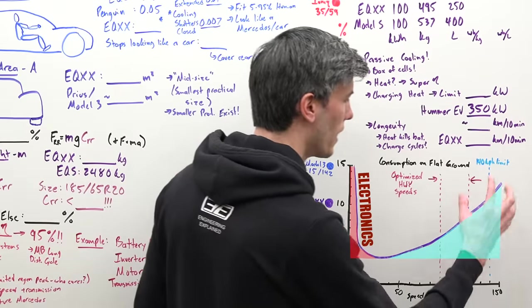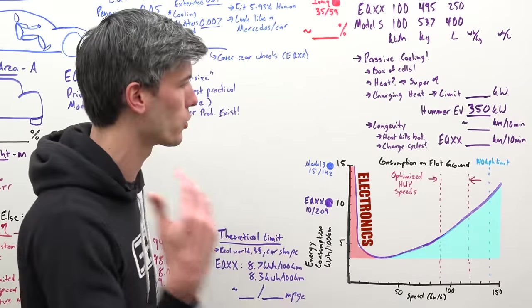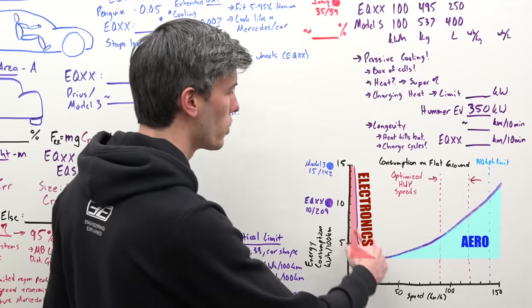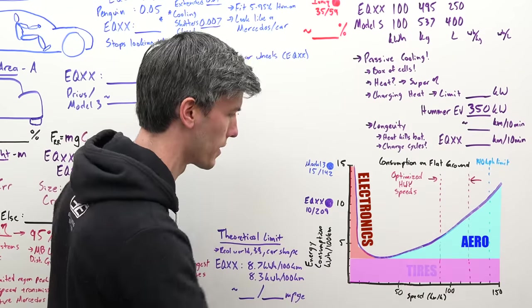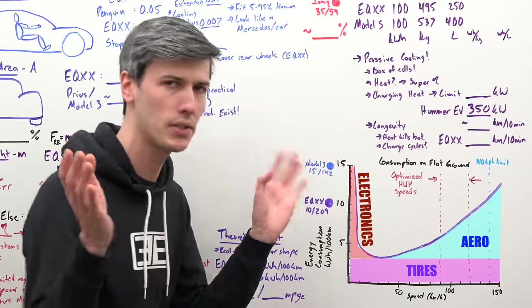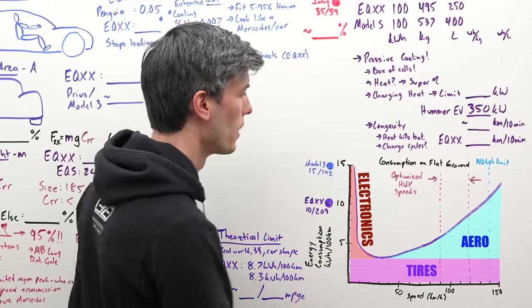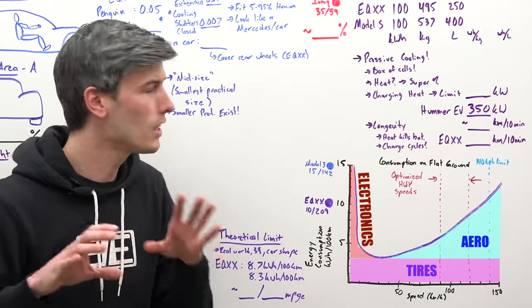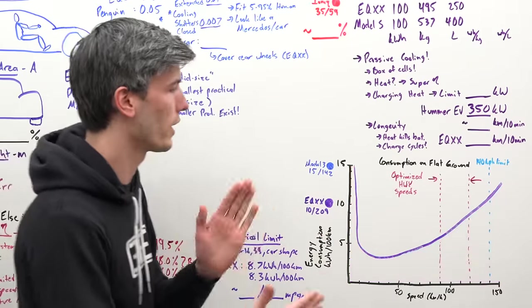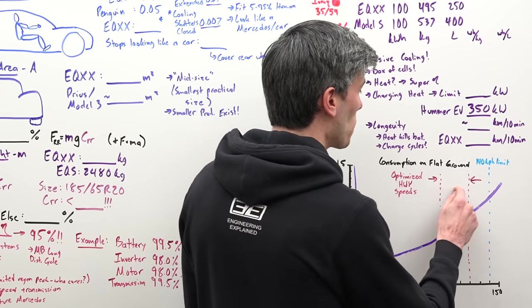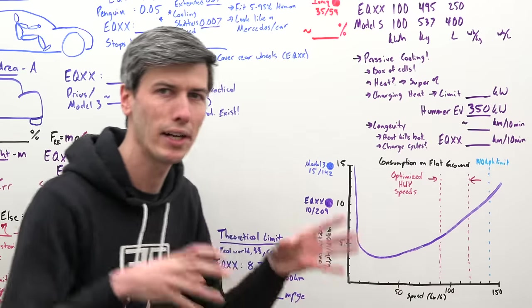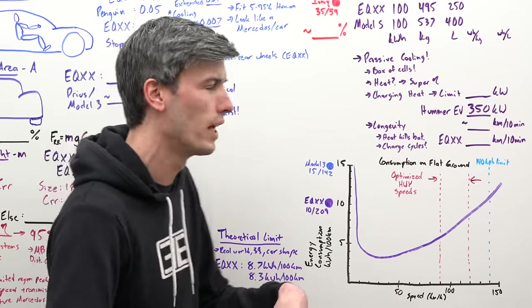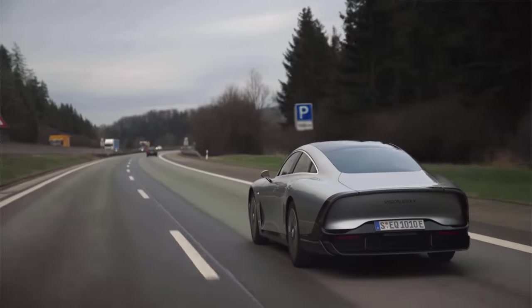But as you get to higher speeds, aerodynamic drag becomes a problem. This gives you this shape where your floor is made up of rolling resistance. It's not a perfect line but for the purposes of this video that's fine. For the Mercedes EQXX, they're trying to optimize for efficiency within this range at higher speeds. They want a high speed efficient vehicle, efficient on the highway.